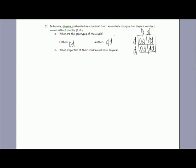And then... So you cross it or whatever. And then b is what proportion of their children will have dimples, and the ratio is two to two, or one to one.